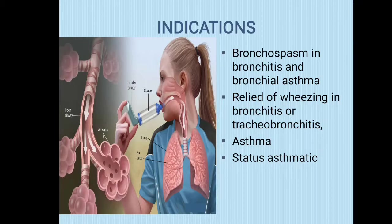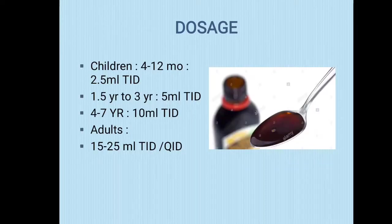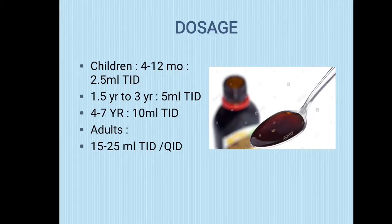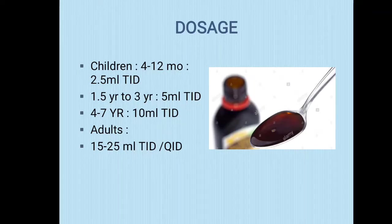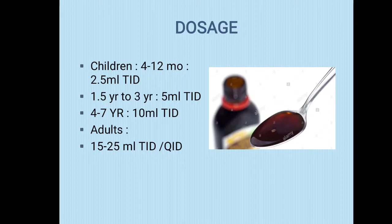Its indications include bronchospasm, bronchitis, and bronchial asthma, as well as relief of wheezing in bronchitis, tracheal bronchitis, asthma, and related conditions. The doses of this syrup are: for children 4 to 12 months, 2.5 ml TID; 1.5 to 3 years, 5 ml TID; 4 to 7 years, 10 ml TID; and adult doses are 15 to 25 ml TID or QID. Note that 15 ml equals one tablespoon and 5 ml equals one teaspoon.